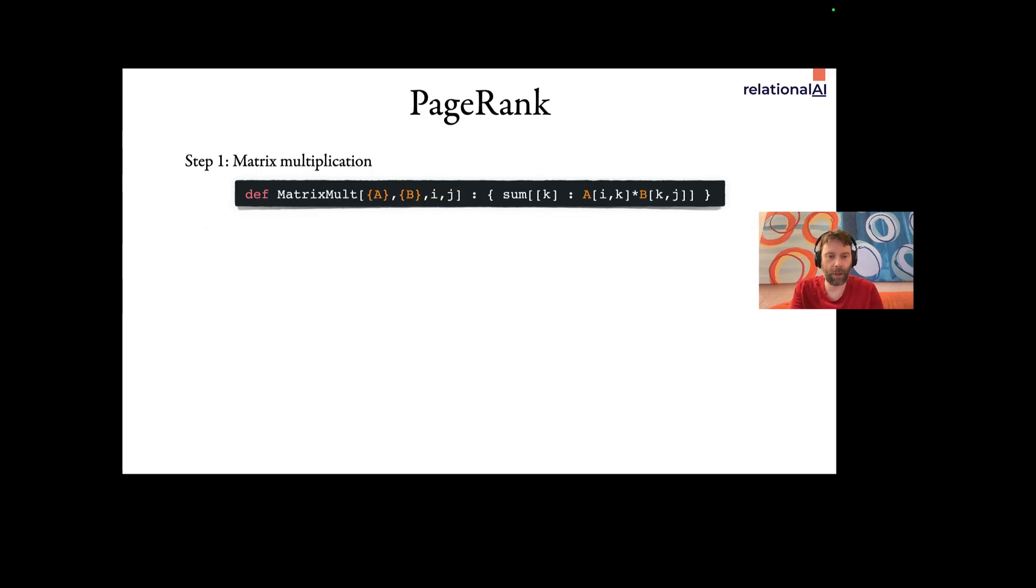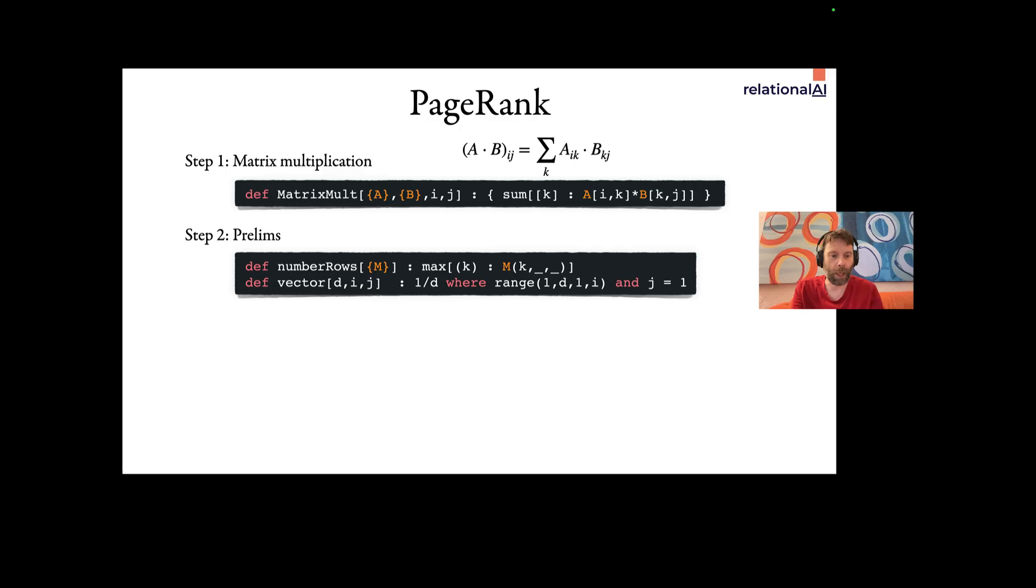Last example, I'm going to do a simplified PageRank. So you can define general matrix multiplication in REL just like this. This is just one line of code, right? And it looks very, very similar to how you would write matrix multiplication in mathematics. Okay, now I'm going to skip some boring preliminaries, like writing how many rows a matrix has, or defining a vector of length d, in which every entry is 1 over d, which you need to initialize PageRank.